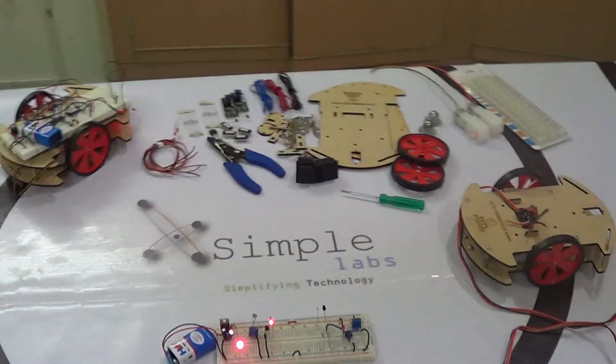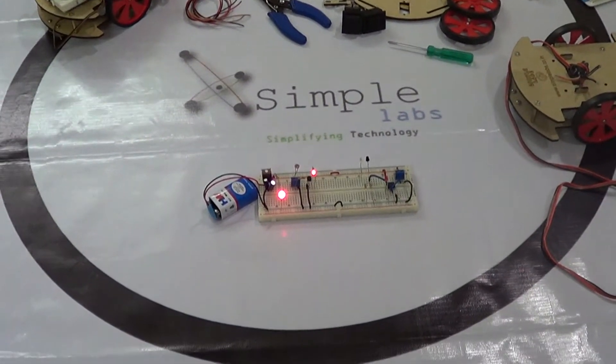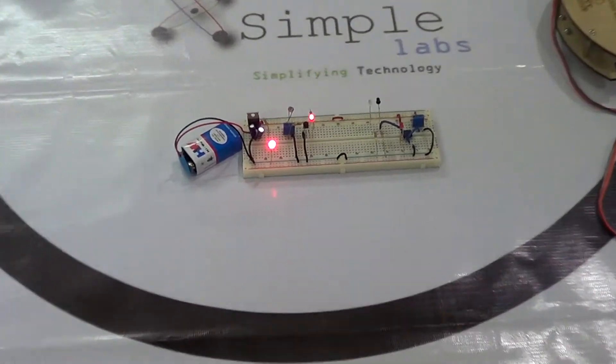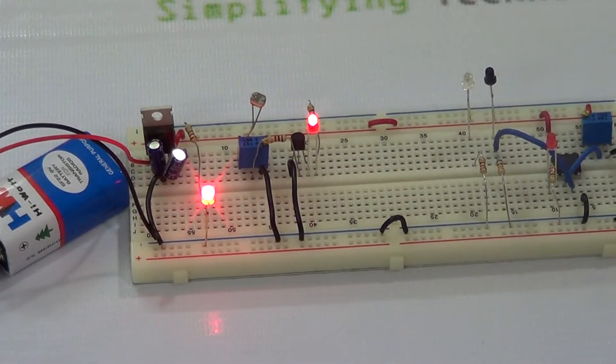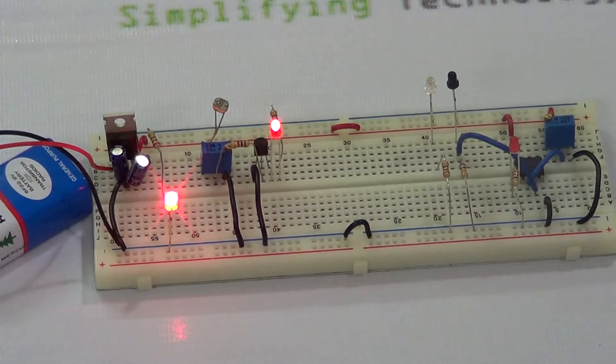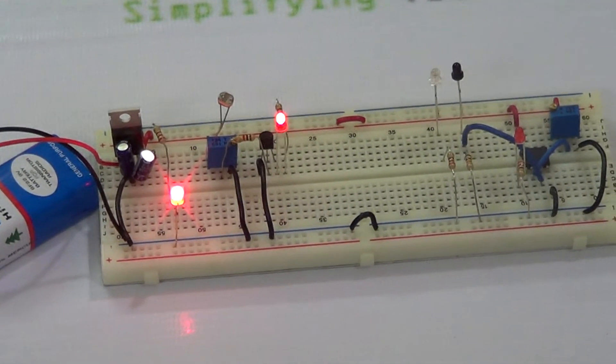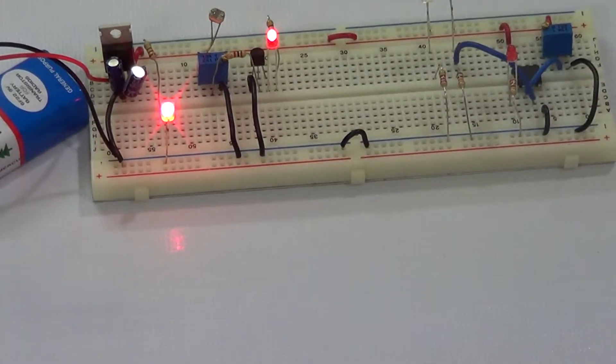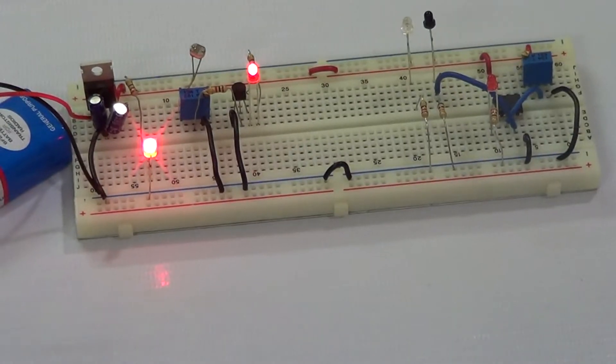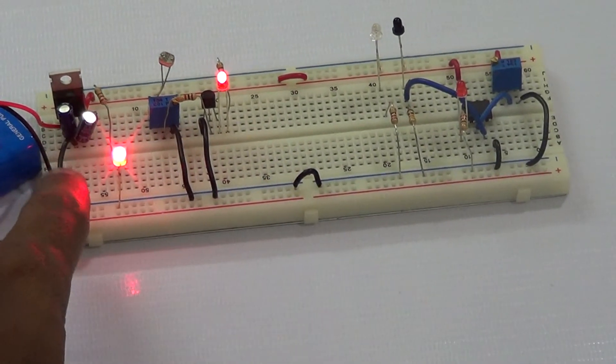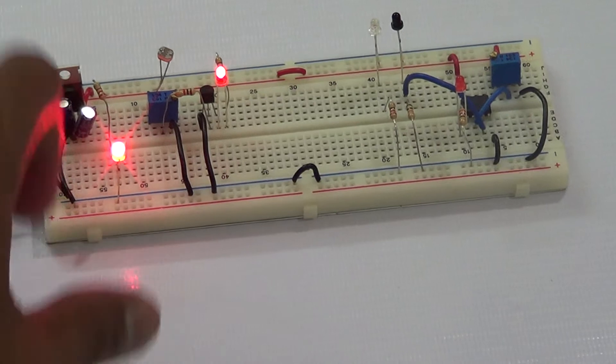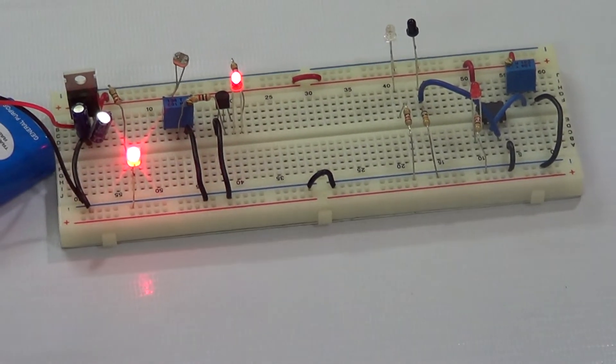And then as we proceed to the next session you will learn how to build circuits. Now you can see we have three different circuits here which you will learn to build. As a first step you will learn to build the voltage regulator part which is this part of the circuit here.